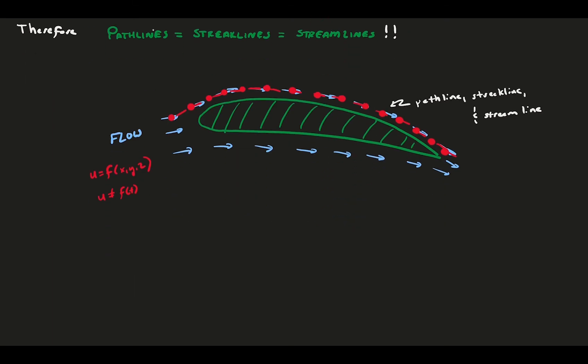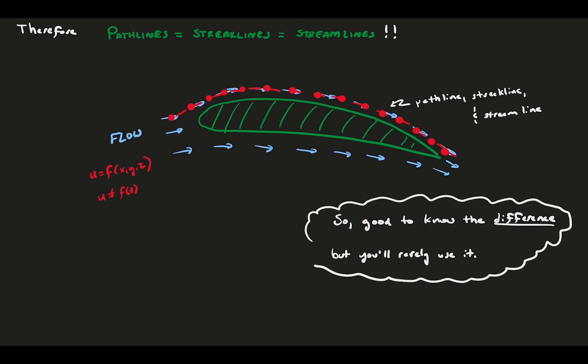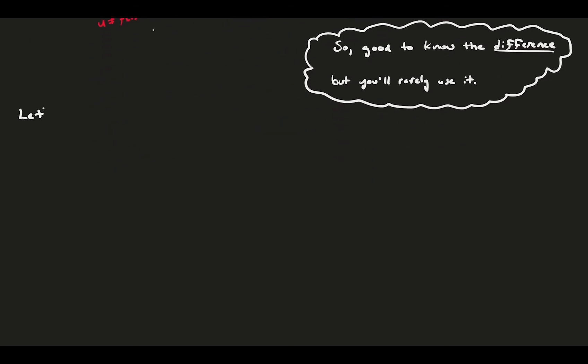So, while it's good to physically understand the difference between pathlines, streaklines, and streamlines, in case you come across them in practice, you will almost never need to apply your knowledge of these differences because most basic aerodynamic flows are considered steady. Let's take the most popular of the three, the streamline, and explore it a bit further and define it mathematically.